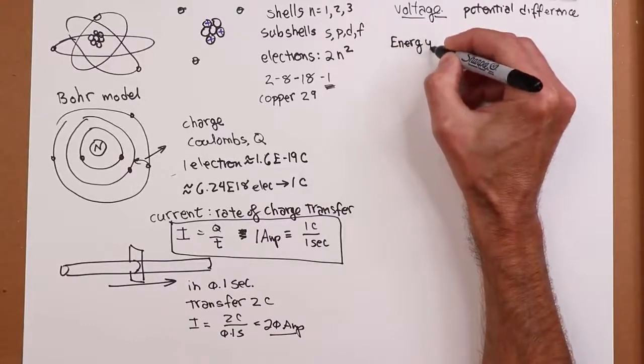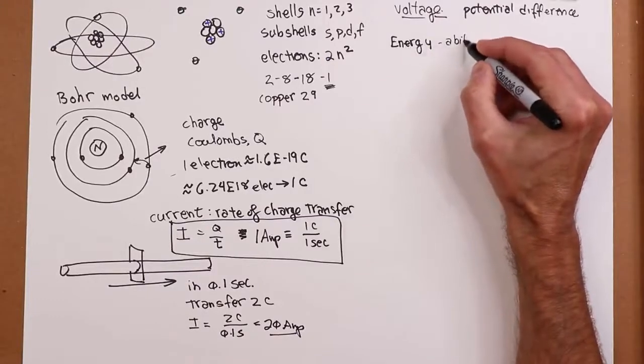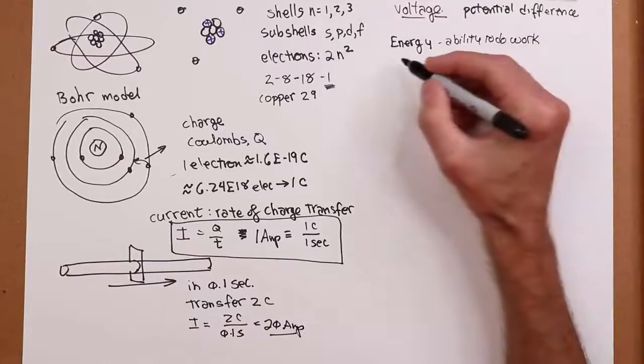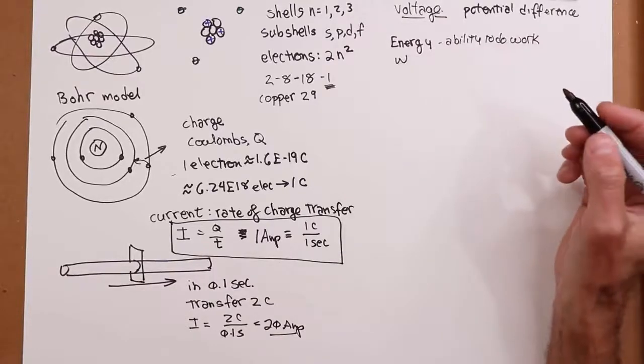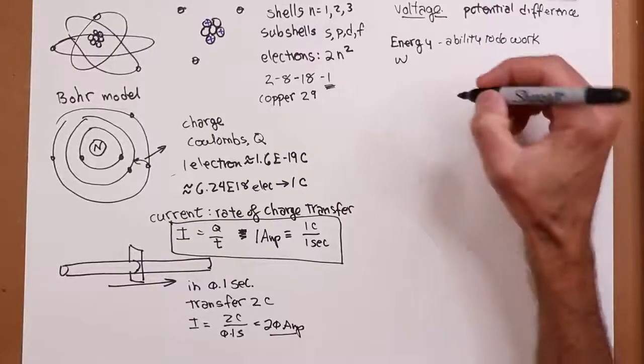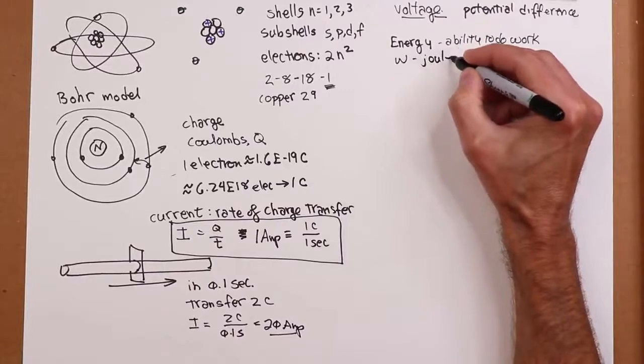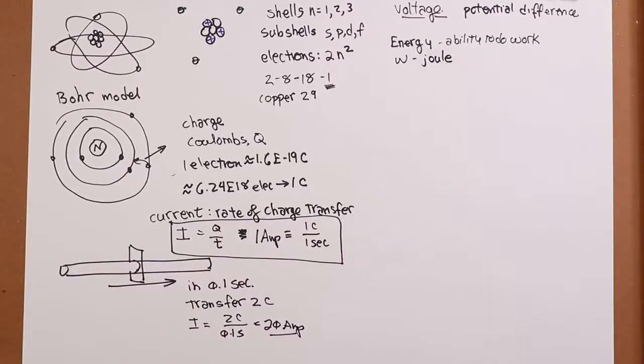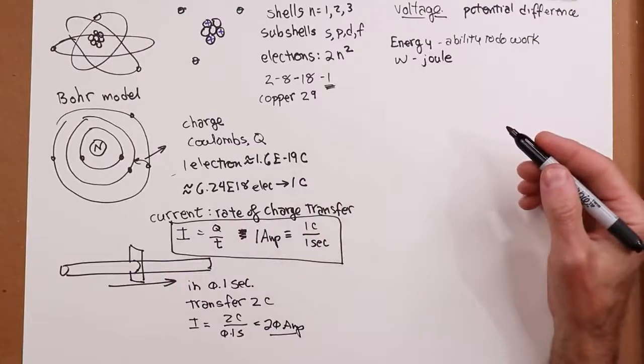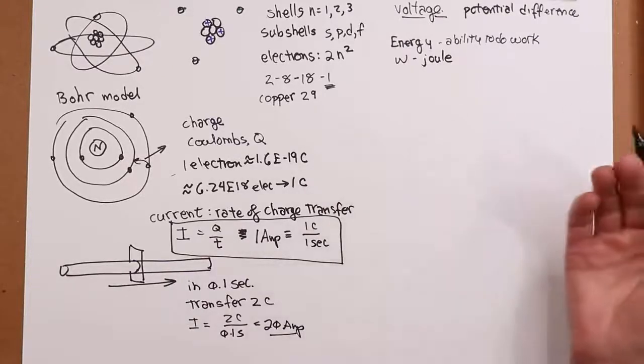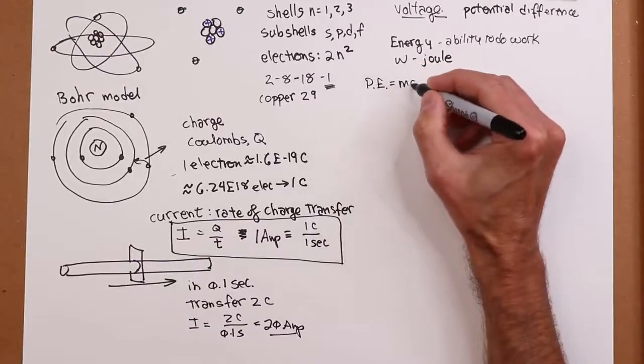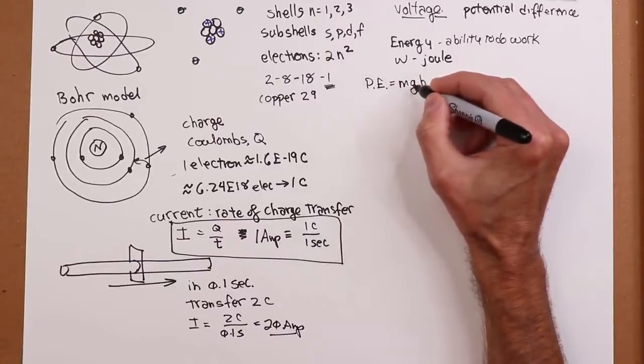We can talk about energy. What is energy? Energy is the ability to do work. And we usually denote that with a W for work. And there are many different units. For example, calories, kilowatt hours. The one that we use is the joule. That's the standard SI unit, the joule. Now, we can break this apart into sort of two types. We have kinetic energy, or energy of motion. And we have potential energy, which is energy by virtue of position. And if you're going to talk about potential energy, it's usually denoted with an equation, mgh. Mass times gravity times height.